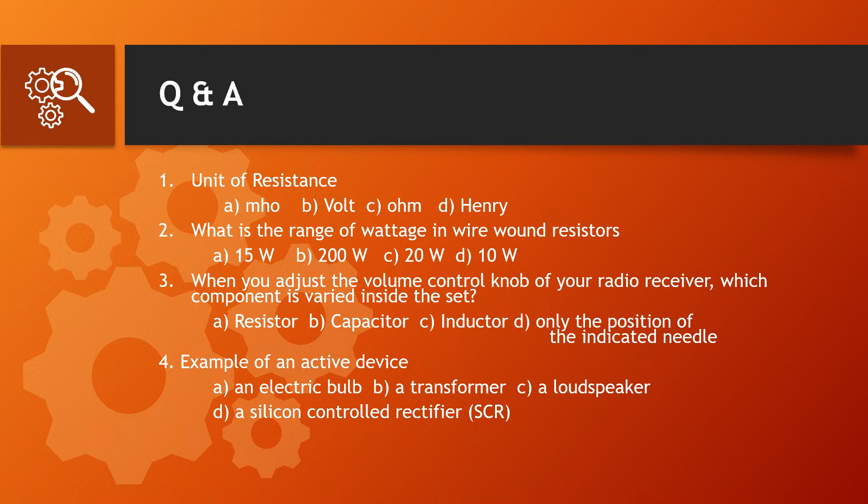Question 2 concerns the range of voltage for wire-wound resistors. The correct answer is Option B, 200W. The other three options we will strike out. Option B is the correct answer.